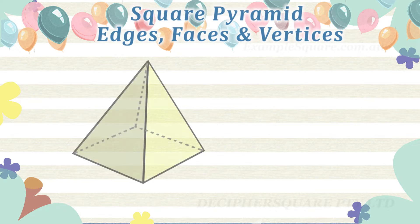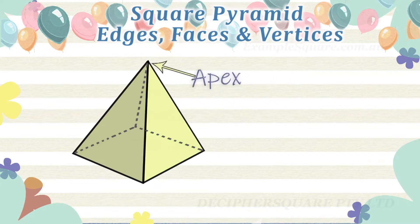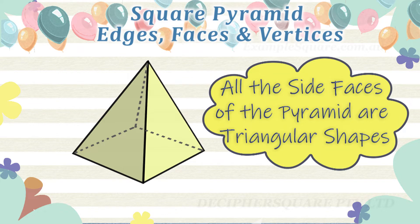A pyramid is a three-dimensional shape with a single polygon shape base and flat triangular sloping sides that meet at the common top point called the apex. All the side faces of the pyramids are triangles.